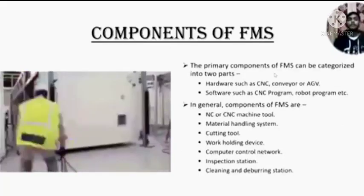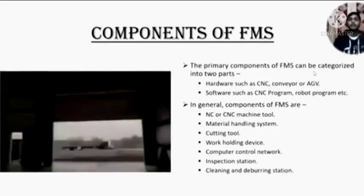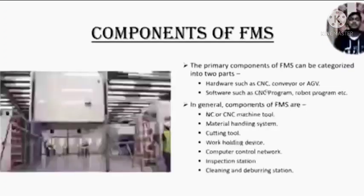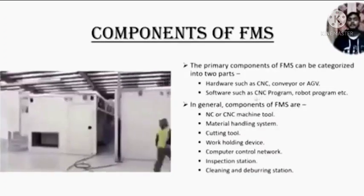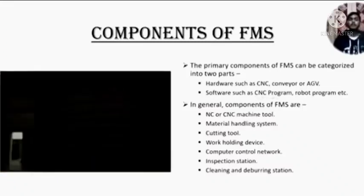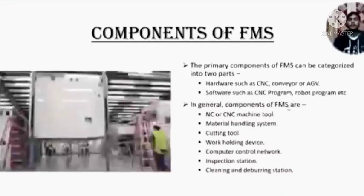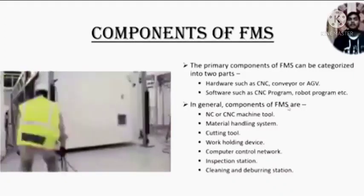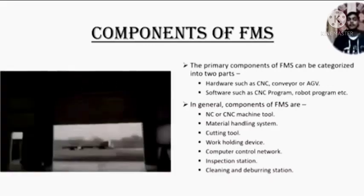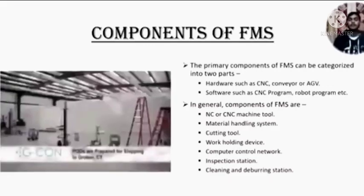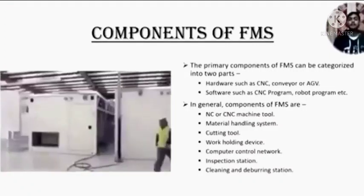Components of FMS. The primary components of FMS can be categorized into two parts: hardware such as CNC, conveyor, or AGV; and software such as CNC programs, robot programs, etc. In general, components of FMS are NC or CNC machine tools, material handling system, cutting tools, work holding devices, computer control network, inspection station, cleaning and deburring stations.